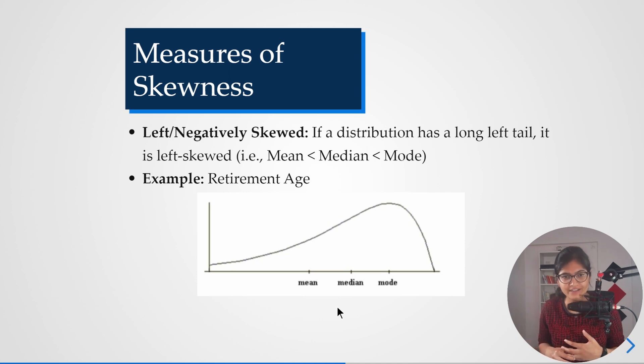As we move on in increasing the age, the number of deaths will be definitely high, due to maybe some health conditions or some other conditions also. Even though it's not guaranteed, but still if we see the overall graph or the survey, you can see that will also follow a left or negatively skewed distribution.